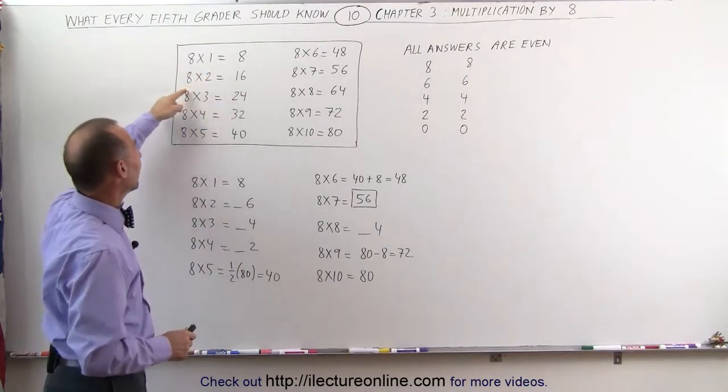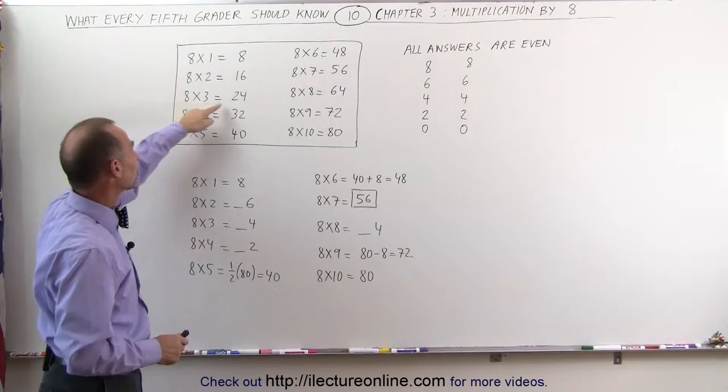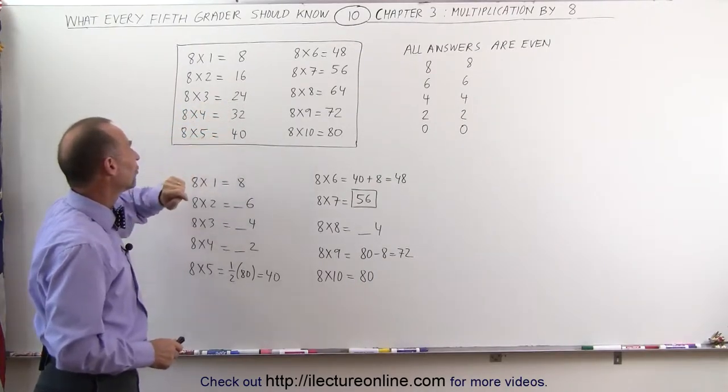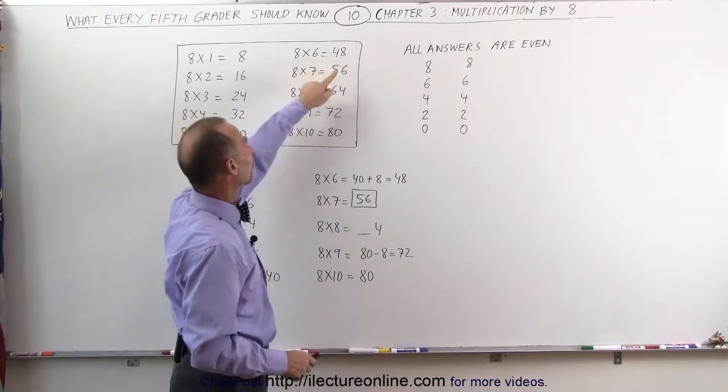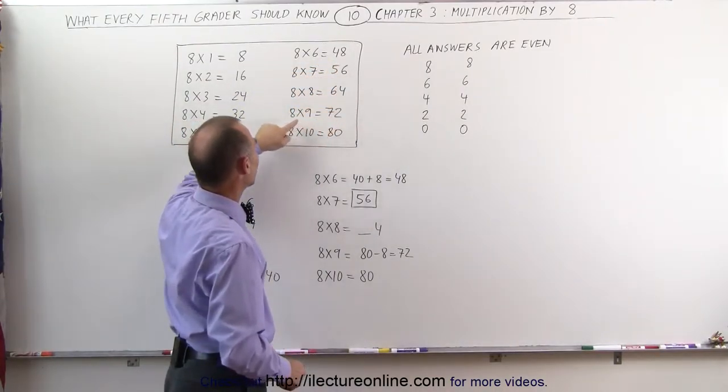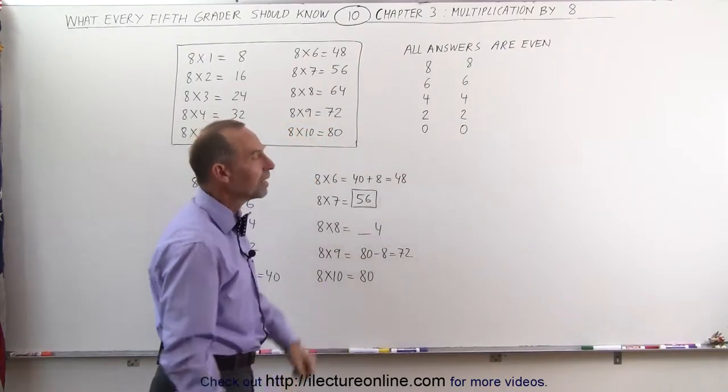Notice that 8 times 1 is 8, 8 times 2 is 16, 8 times 3 is 24, 8 times 4 is 32, and 8 times 5 is 40. 8 times 6 is 48, 8 times 7 is 56, 8 times 8 is 64, 8 times 9 is 72, and 8 times 10 is 80.